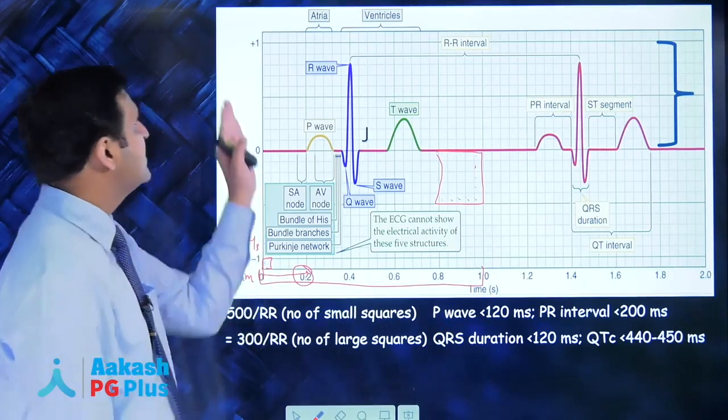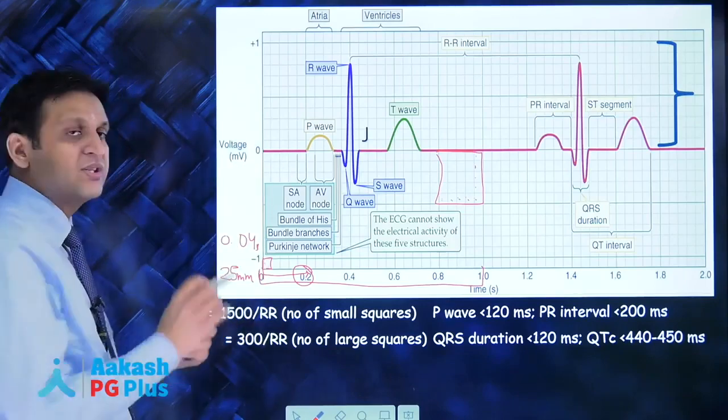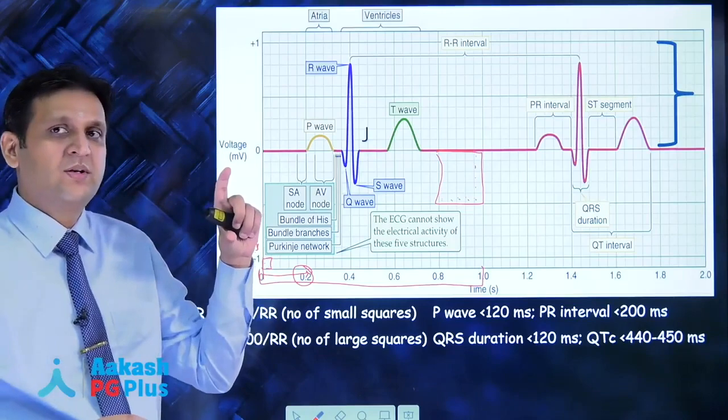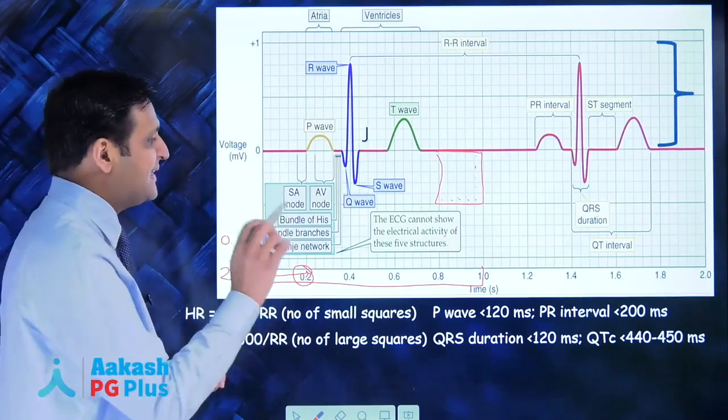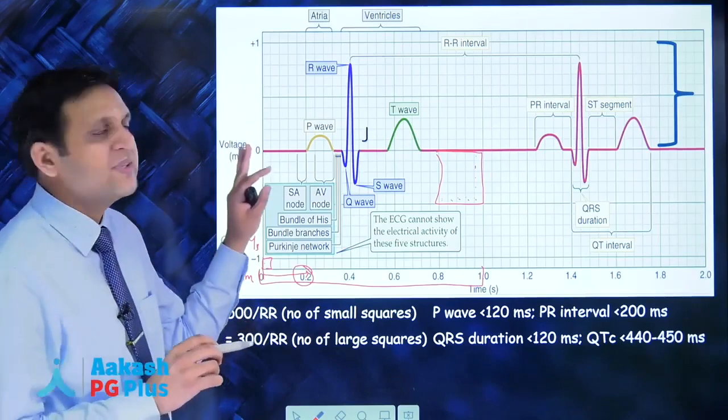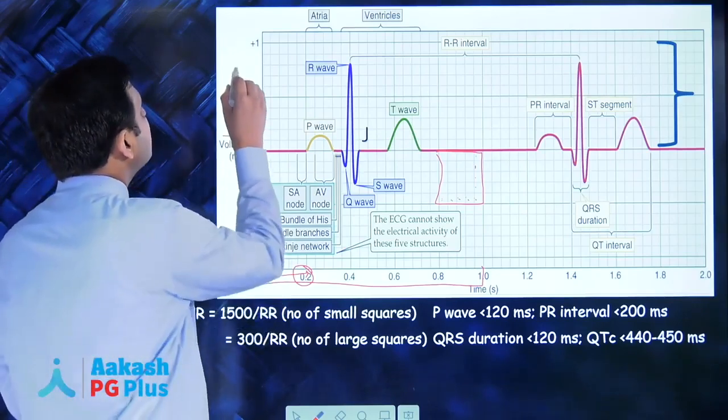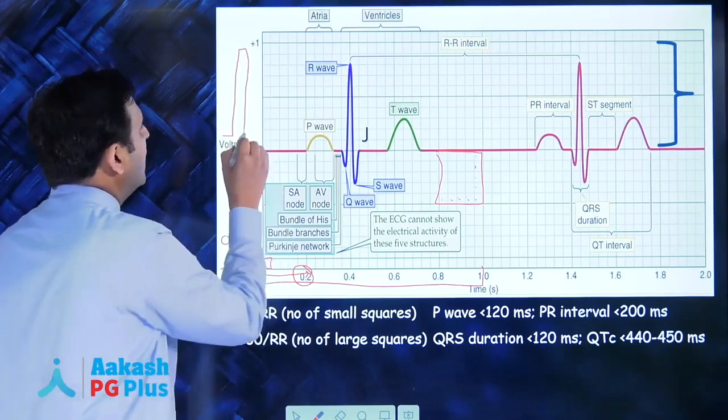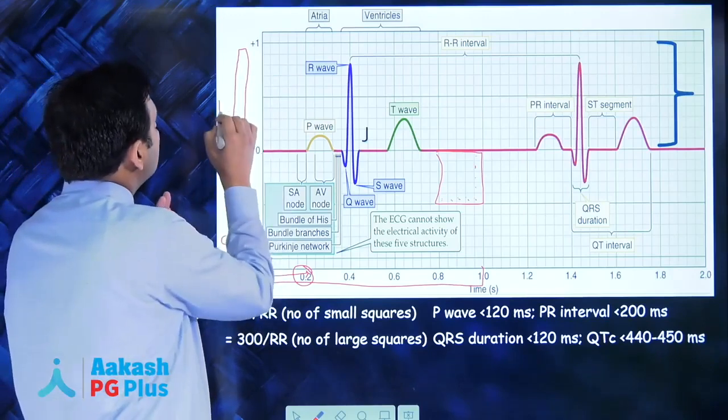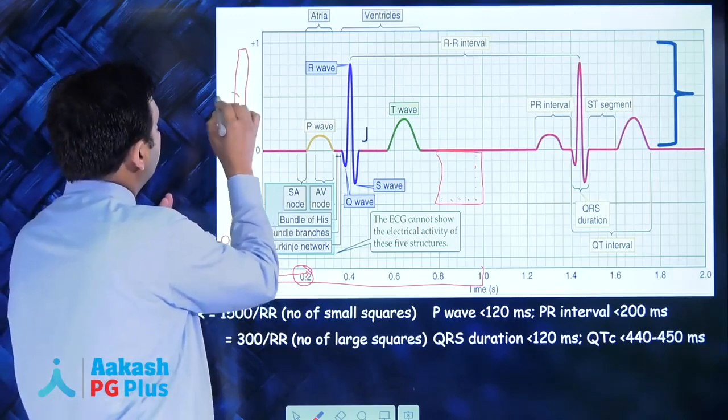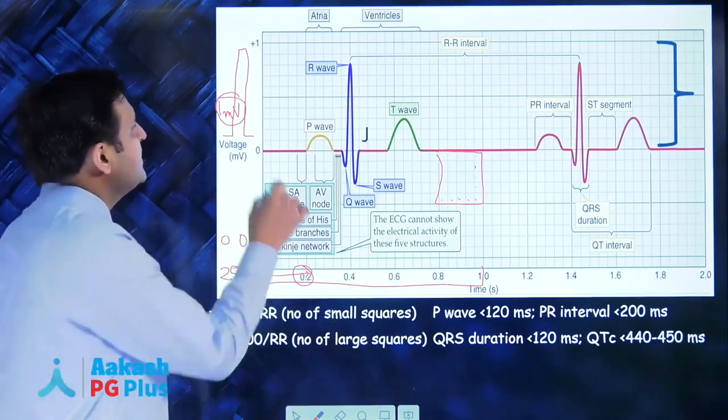The other axis in ECG is the vertical axis. The vertical axis measures the voltage of the waves. How is that done? By standardization. Most ECGs will have something like this at the top or side. What it tells us is 10 squares equals 1 millivolt - that is the standardization in ECG.